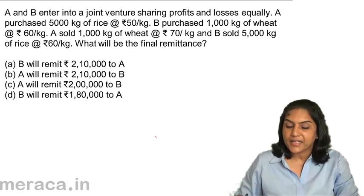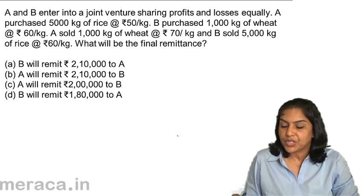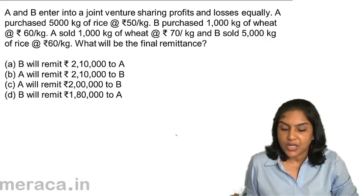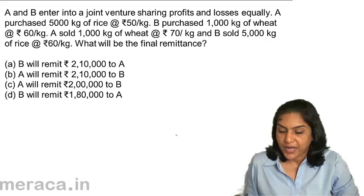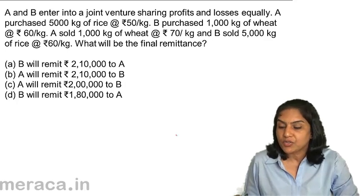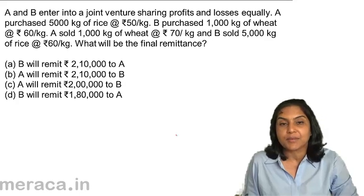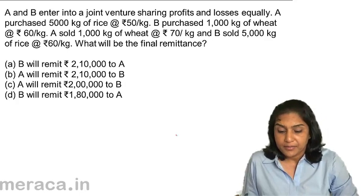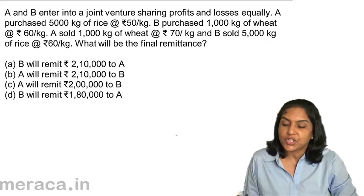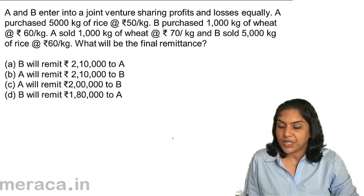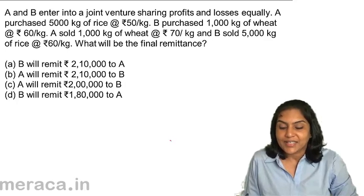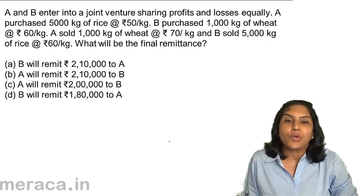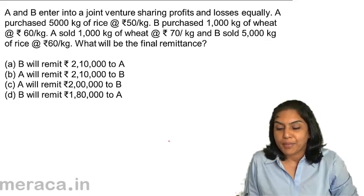A and B enter into a joint venture, sharing profits and losses equally. A purchased 5,000 kg of rice at the rate of ₹50 per kg and B purchased 1,000 kg of wheat at ₹60 per kg. A sold 1,000 kg of wheat at ₹70 per kg and B sold 5,000 kg of rice at ₹60 per kg. What will be the final remittance?